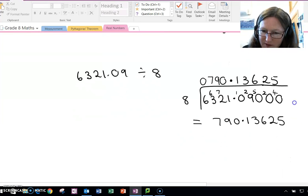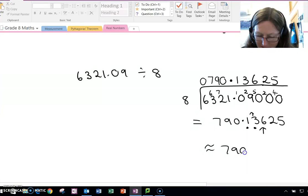Let's say it also says to do 2 decimal places. One, two. I look at the next number, that is bigger than 5, so this 3 here rounds up to a 4. So the answer is approximately 790.14.